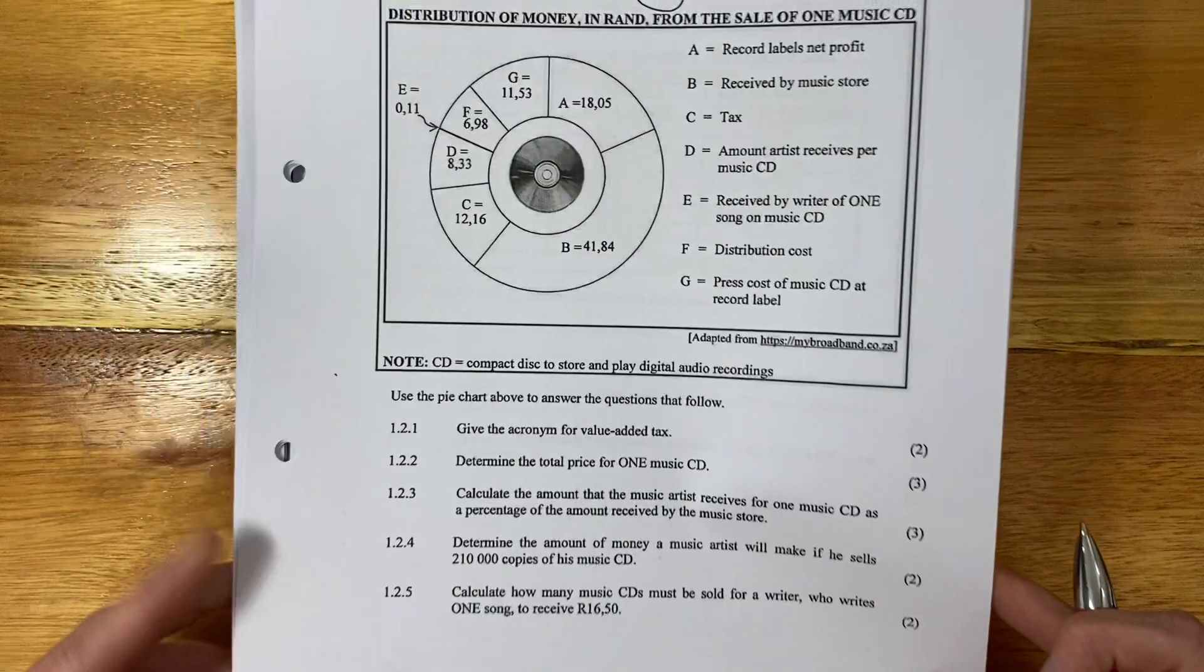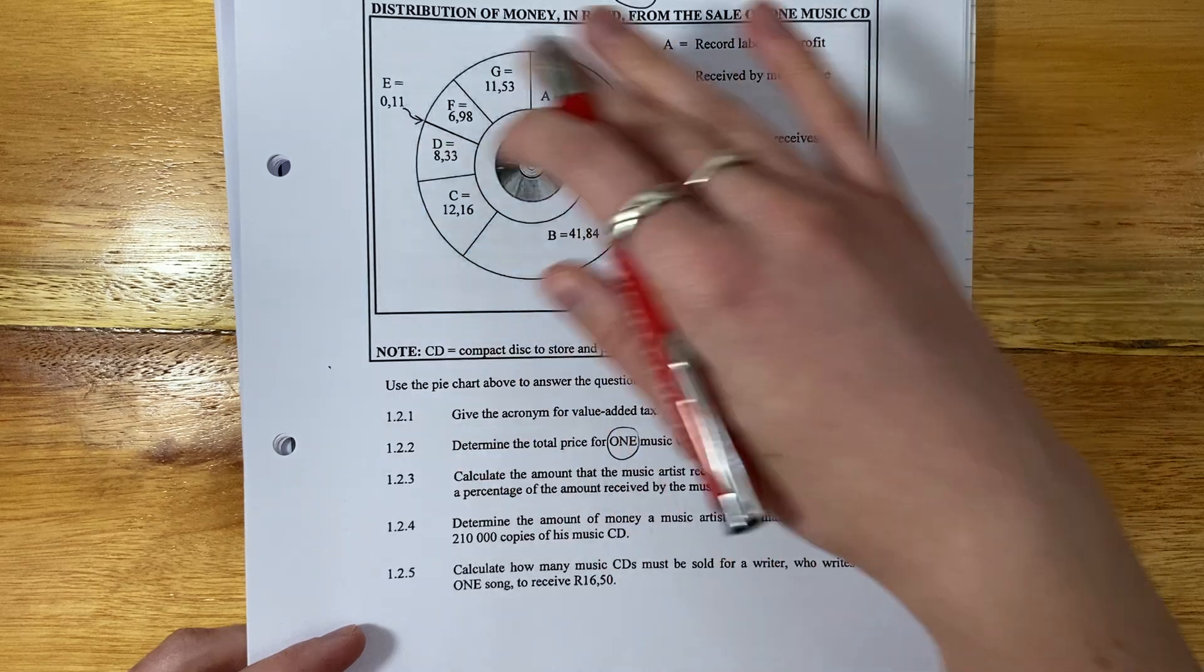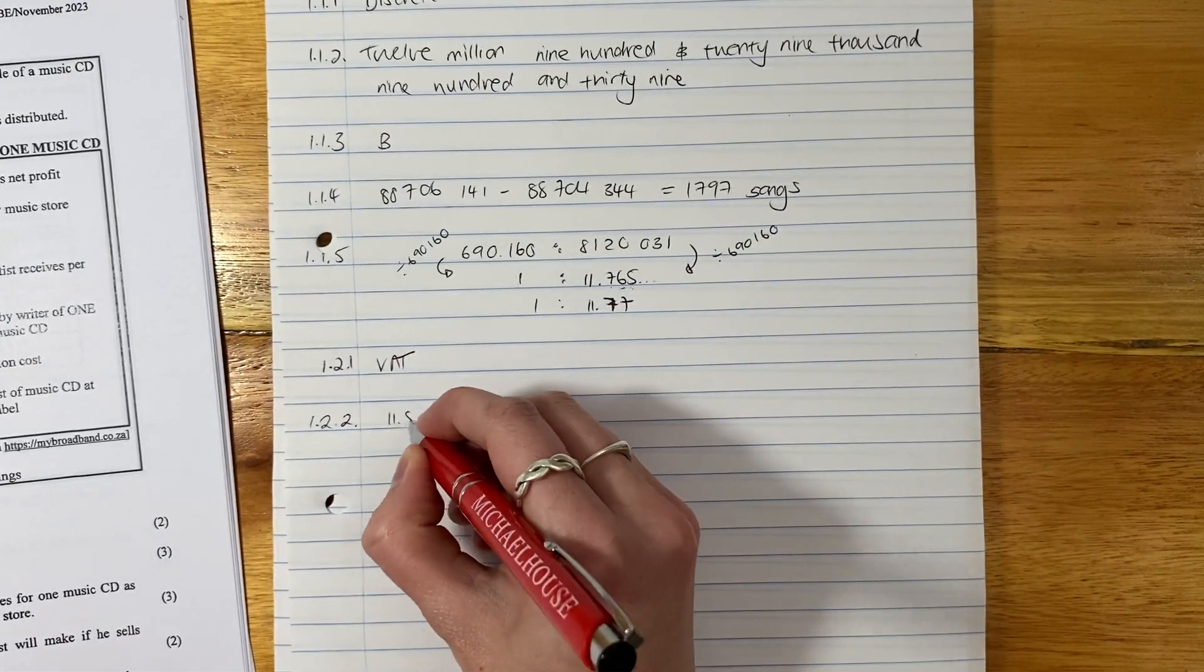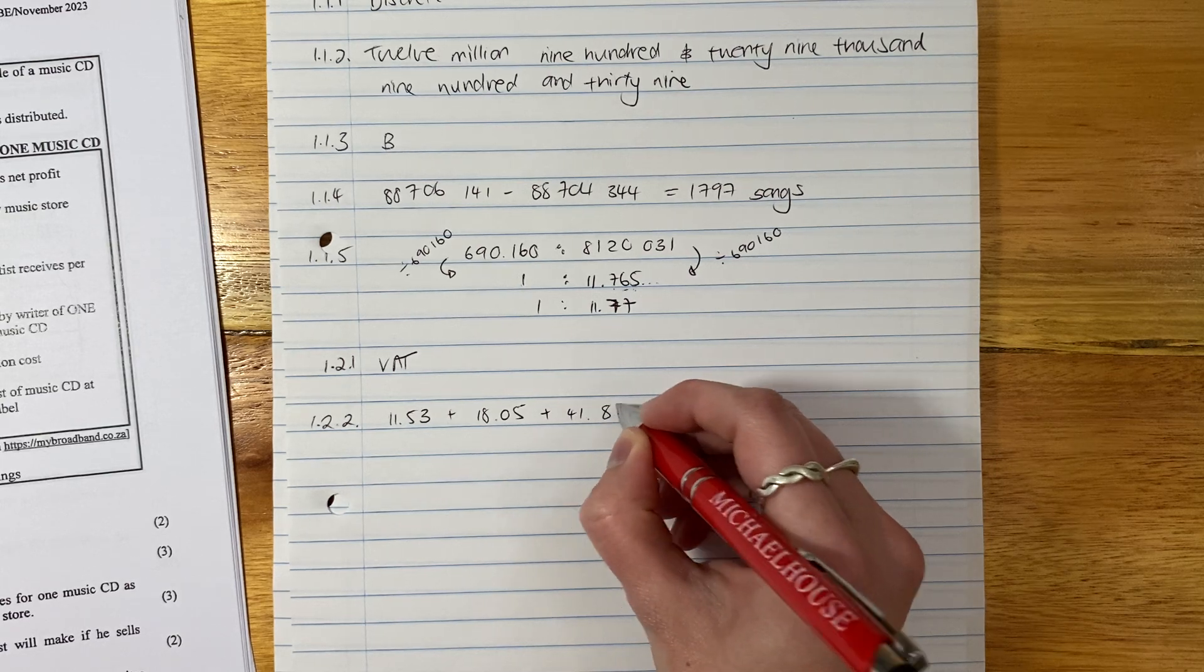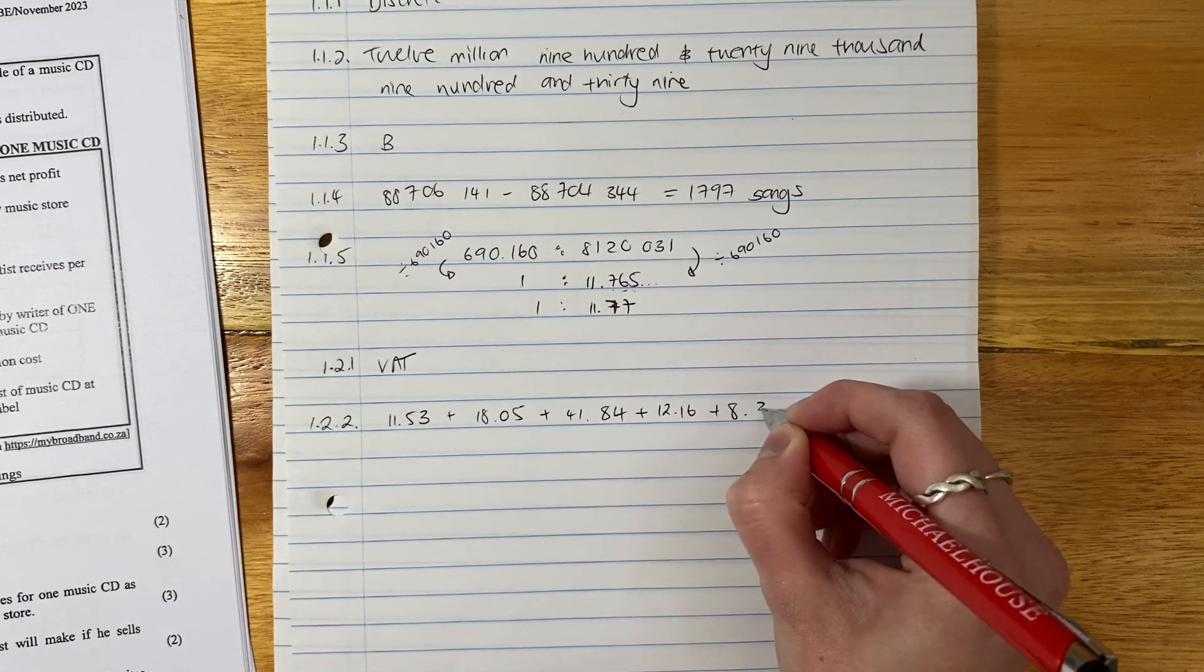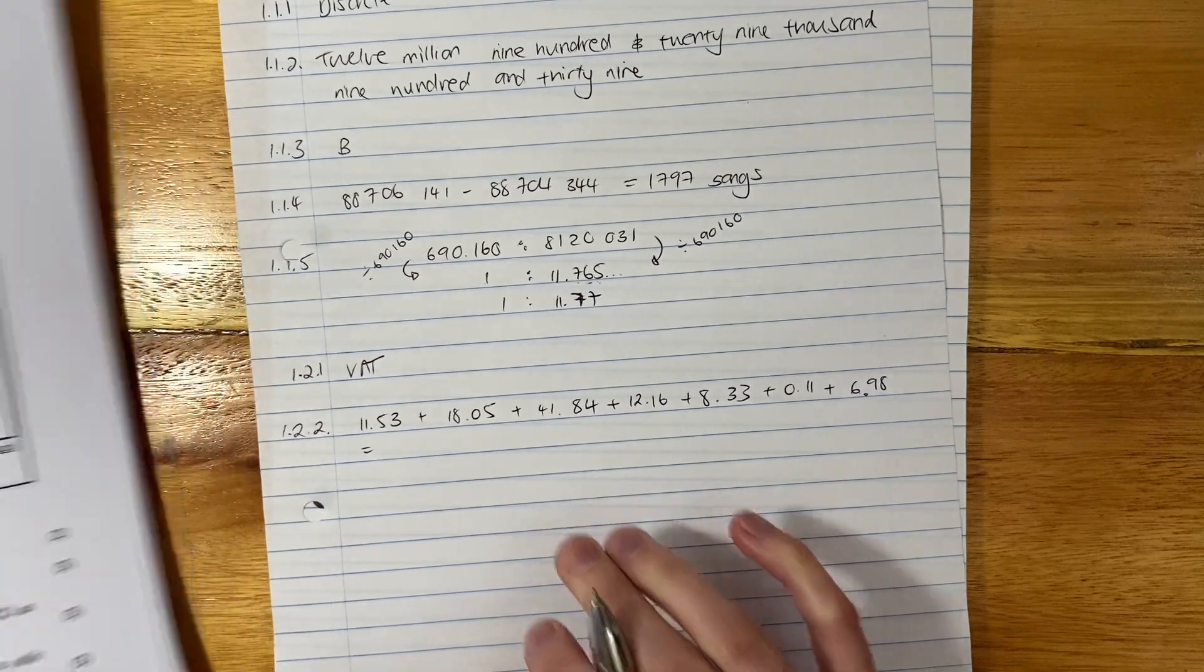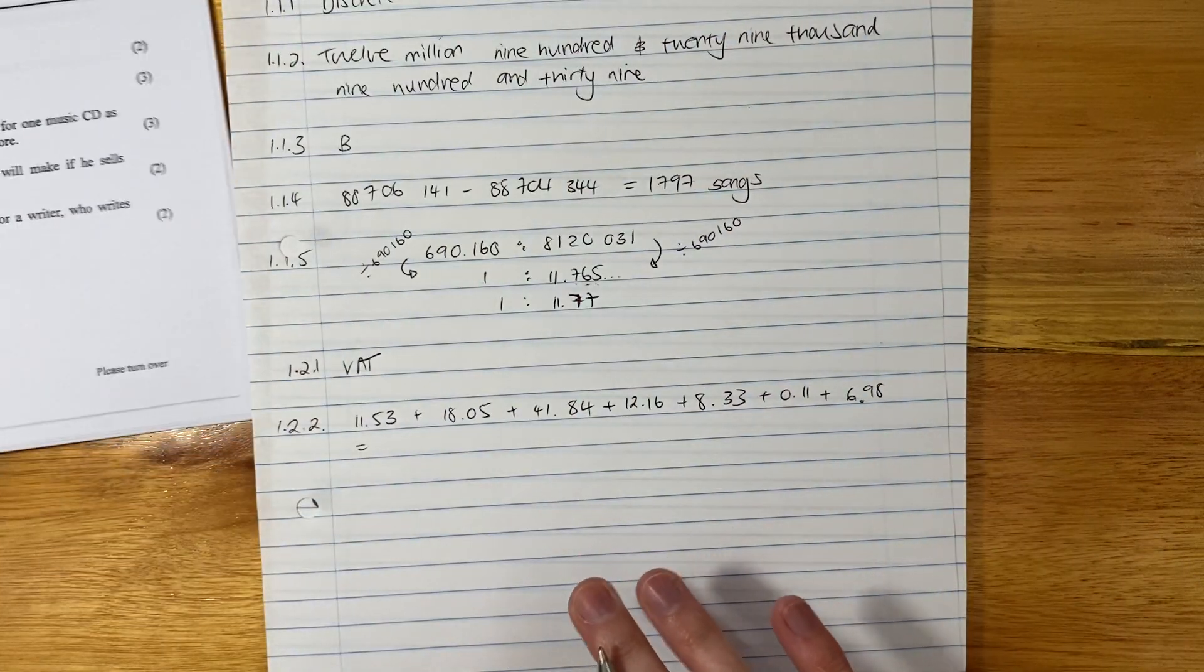Let's now look at the second question. Determine the total price for one music CD. So basically we have to add all of these up, because these are all in rands. Remember, it said in rands. Add them all up, and that will be the price of the music CD. So we say 11.53, that's G, plus 18.05, that's A. B is 41.84, C is 12.16, D is 8.33, E is 0.11 - shame those people are not getting much - and F is 6.98. So you write that out. Remember, in these questions, you have to actually show your working out. You can't just say ta-da. You have to show your working out, because it's more than two marks.